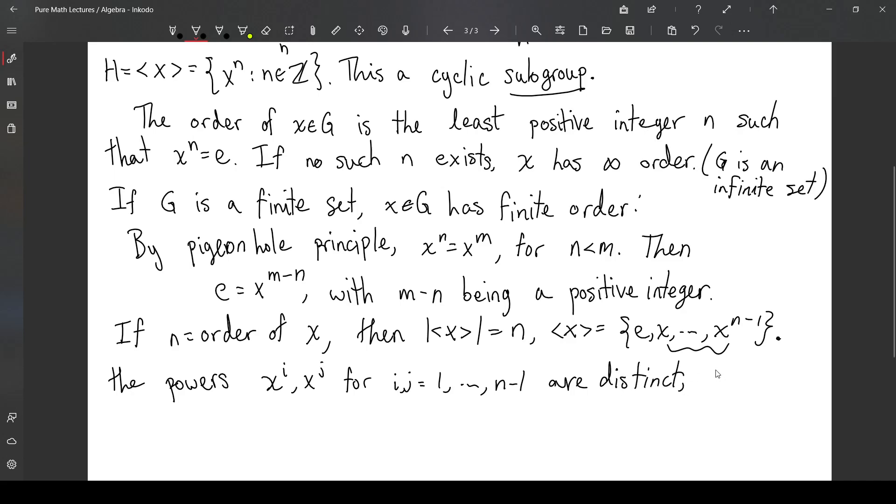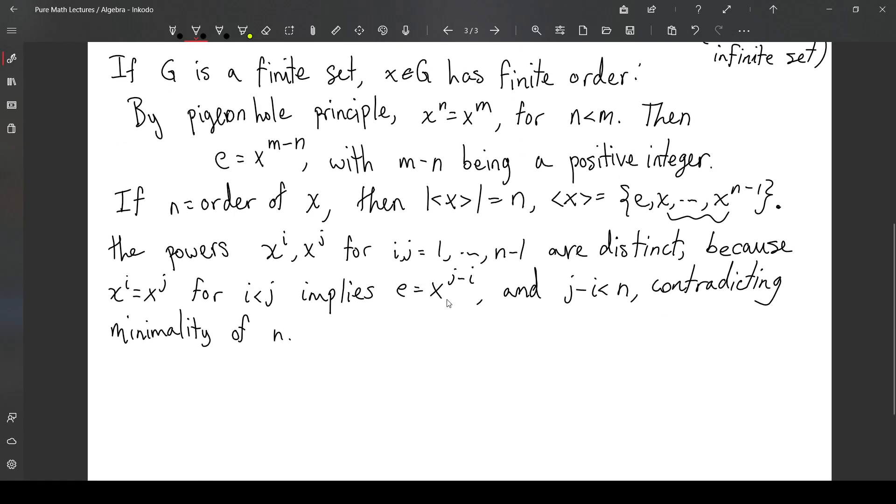Because x to the i equal to x to the j for, say, i greater than j implies, I can multiply by inverses on both sides, and I get x to the j minus i, and j minus i is less than n, contradicting the minimality of n. n is the order of x, and the order is the smallest positive integer such that x raised to that integer is equal to the identity. So this immediately contradicts that fact.